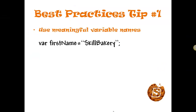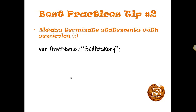Best practices tip number one: always use meaningful variable names. For instance, as you can see here we have 'firstName' as the variable name, so using 'firstName' automatically implies it's the first name of something. We should use camelCase notation for writing variable names, and each variable name should be preceded by a 'var' keyword.